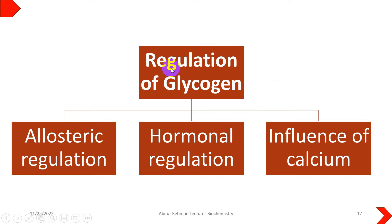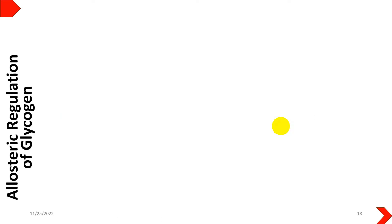When we talk about glycogen regulation, or regulation of glycogen metabolism, it happens by allosteric regulation, or it can happen through hormonal regulation. The third process that could be involved in regulation of glycogen is the influence of calcium — meaning increased muscular activity — which also regulates glycogen metabolism. First we will look into the allosteric regulation of glycogen.